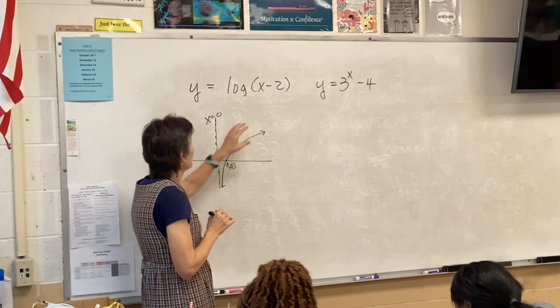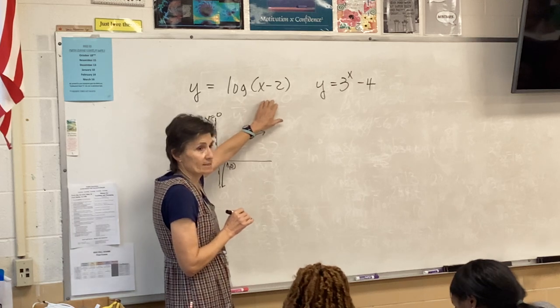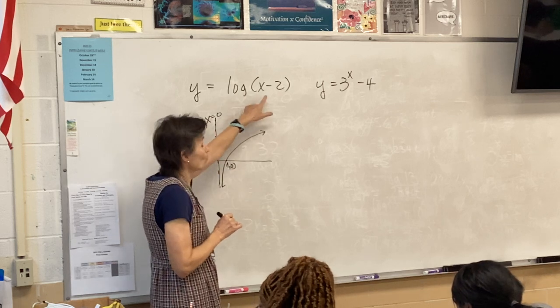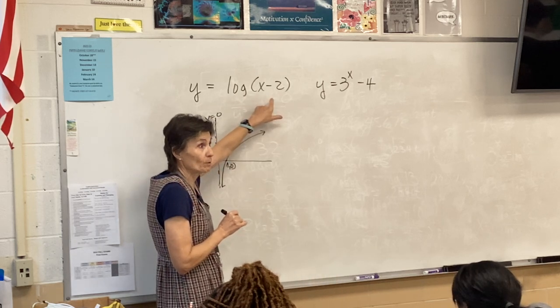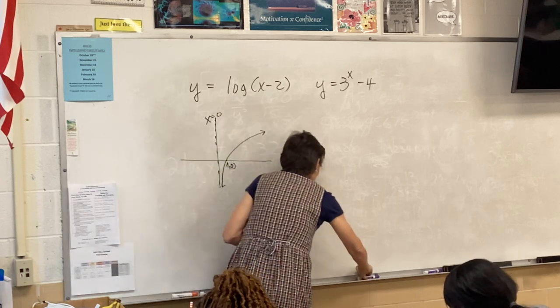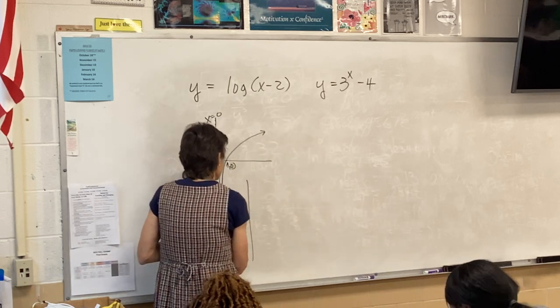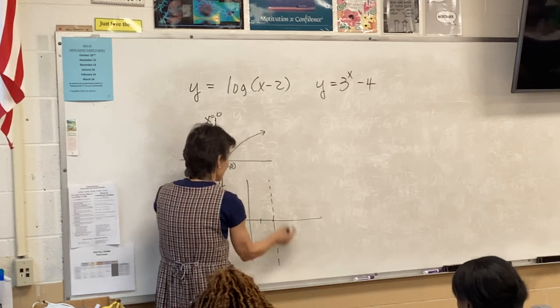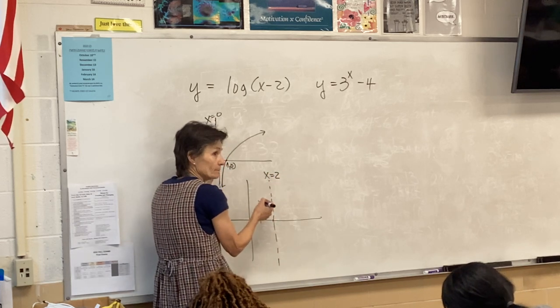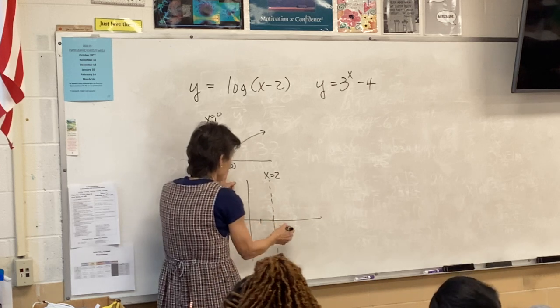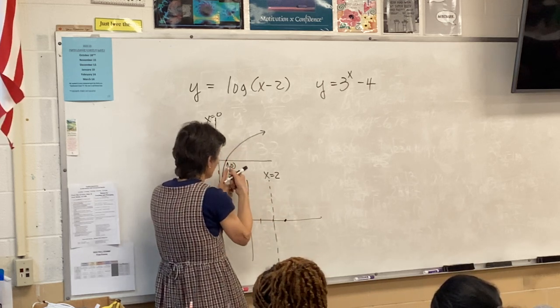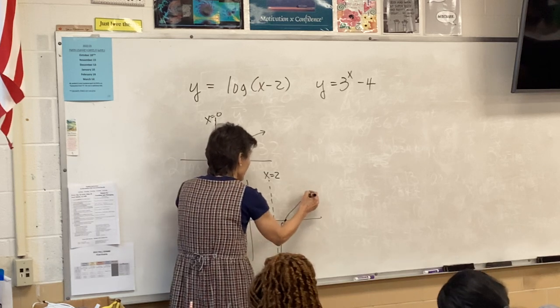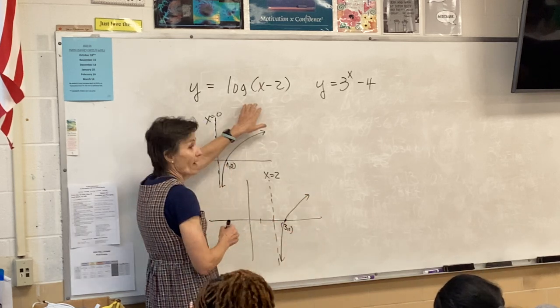Now, what have we done to this? We moved it to the right 2. I'll just redraw it. Now we have an asymptote not at 0, but at x equals 2, and a zero at x equals 3. So this is a picture of that, would everybody agree?